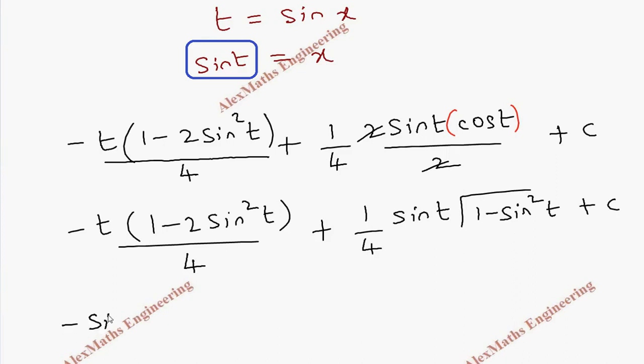The first term is minus sine inverse x into 1 minus 2 x square by 4. Then plus 1 by 4, this is x, and this is root 1 minus x square plus c.